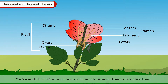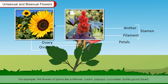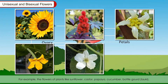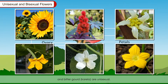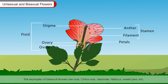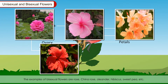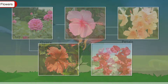Flowers which contain either stamens or pistils are called unisexual or incomplete flowers — all four whorls are not present in them. Examples include sunflower, castor, papaya, cucumber, bottle gourd and bitter gourd. Bisexual or complete flowers have both stamens and pistils, with all four whorls present. Examples of bisexual flowers are rose, china rose, oleander, hibiscus, sweet pea, etc.